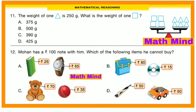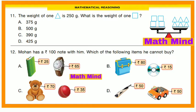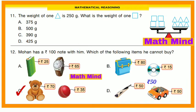Question No. 12: Mohan has a 100 rupees note. Which items can he not buy? Option A: 65 + 25 = 90 (can buy). Option B: 80 + 15 = 95 (can buy). Option C: 70 + 35 = 105, which is more than 100, so he cannot buy both items. Option D: 50 + 50 = 100 (can buy). Option C is correct.